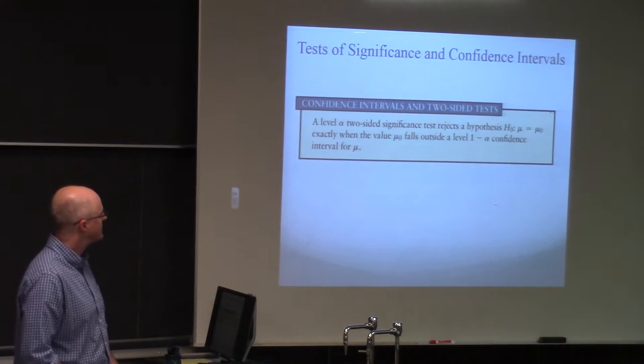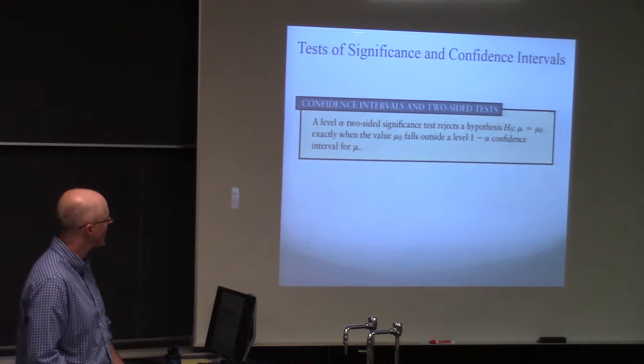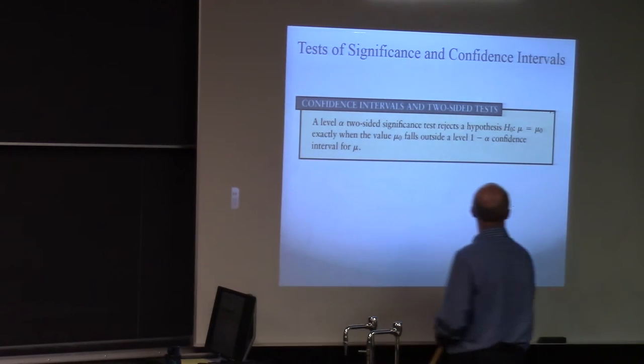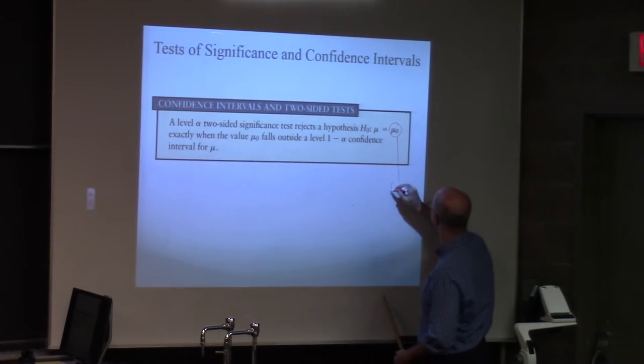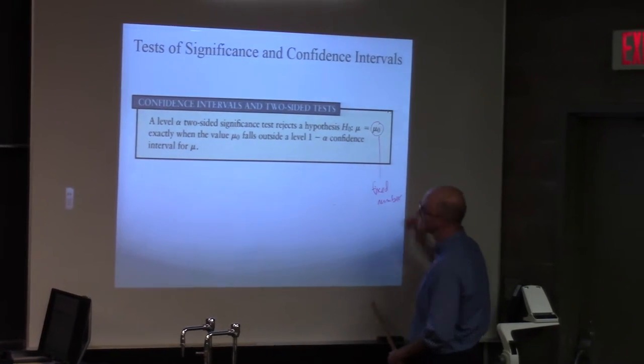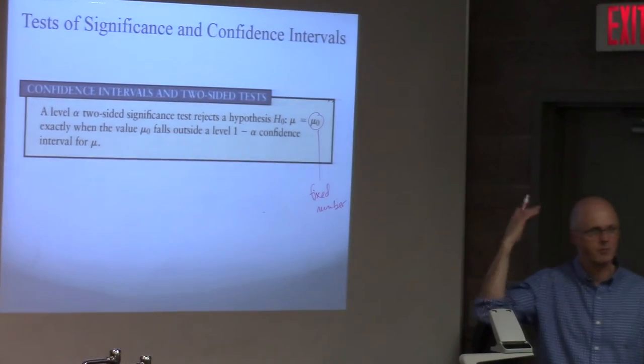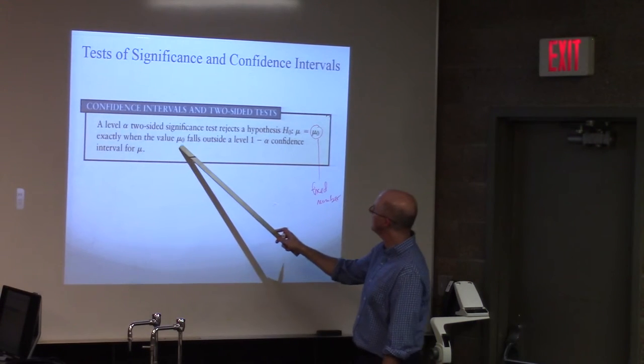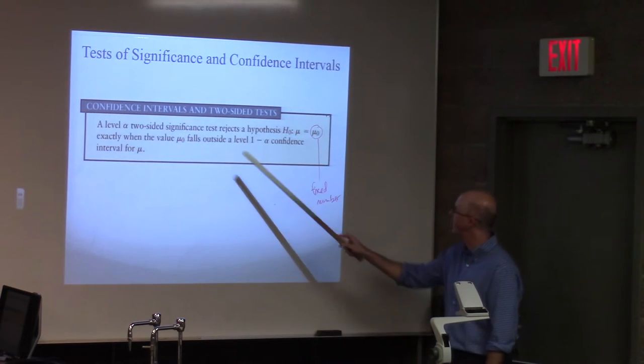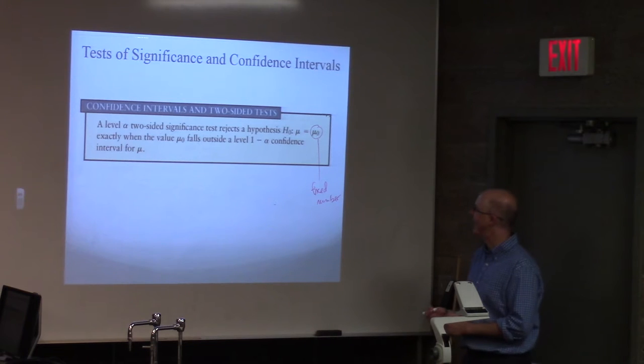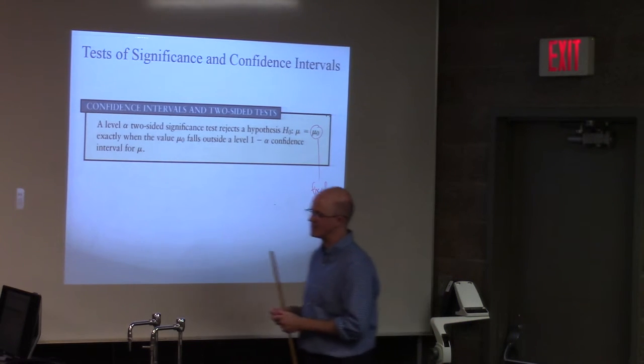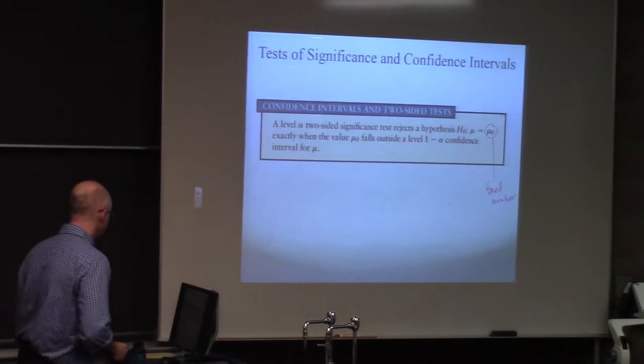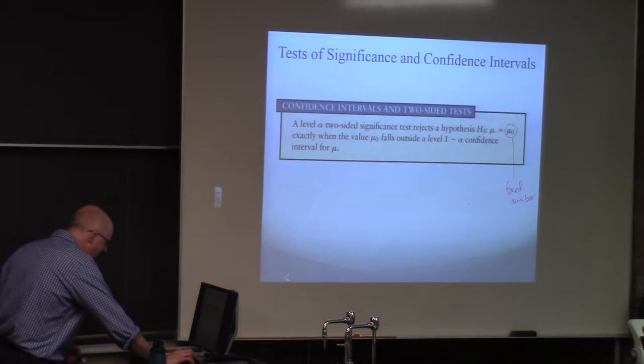A level alpha two-sided significance test rejects a null hypothesis mu equals mu sub zero. This is some fixed number, but they are leaving it unspecified. So when you read something like this, you just want to imagine something specific like 10 or something. Exactly when the value mu sub zero, this number over here, this fixed number, falls outside a one minus alpha confidence interval for mu. Kind of a strange statement. What does it mean? Let me give you an example here.